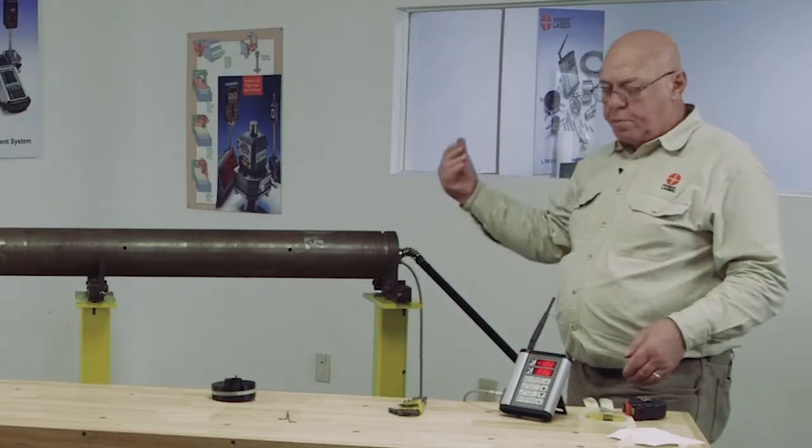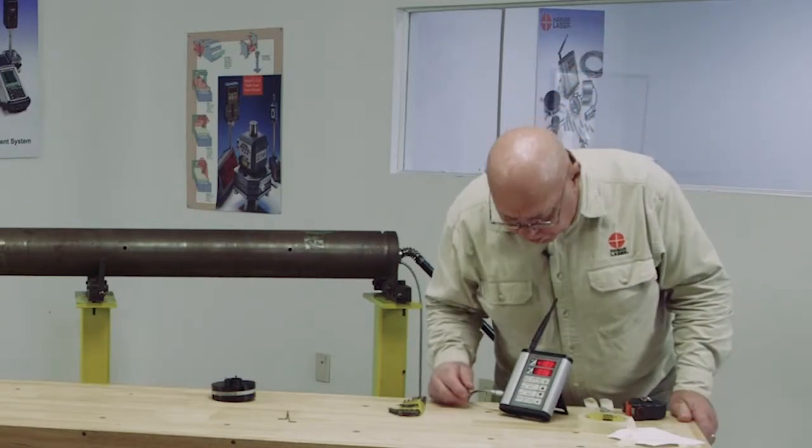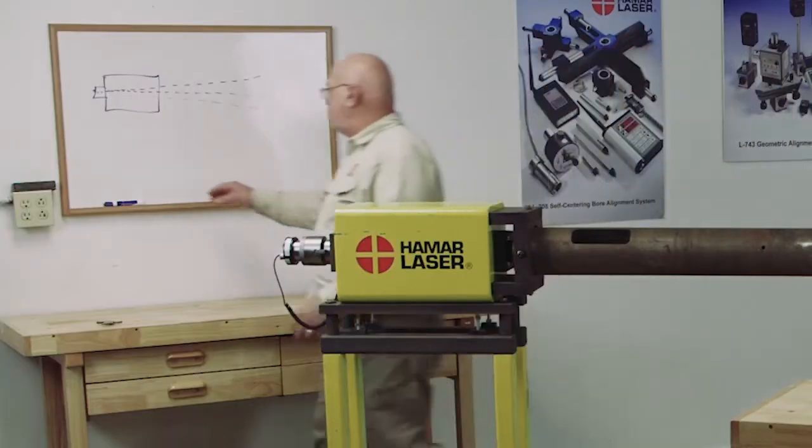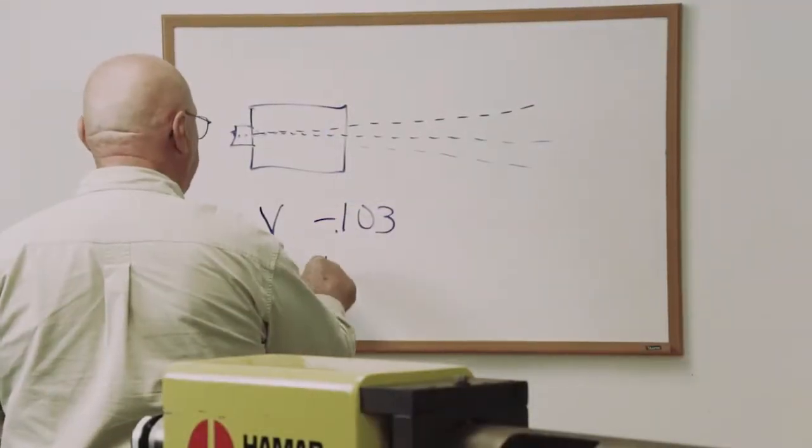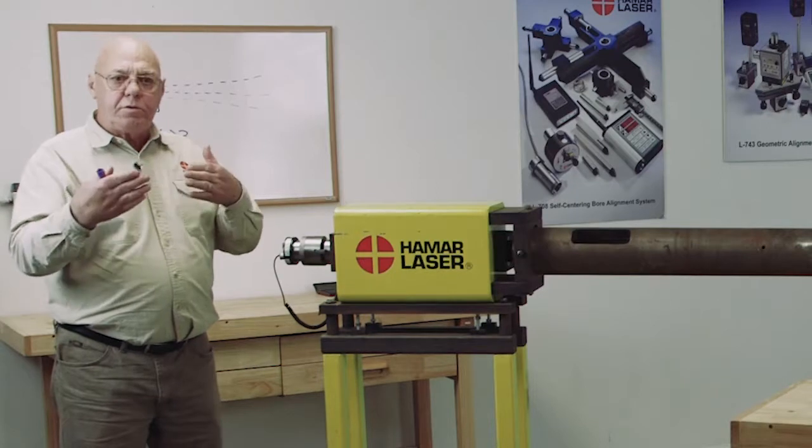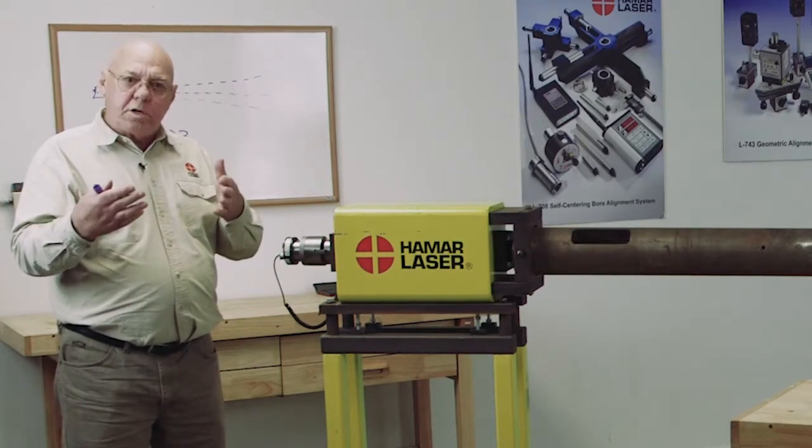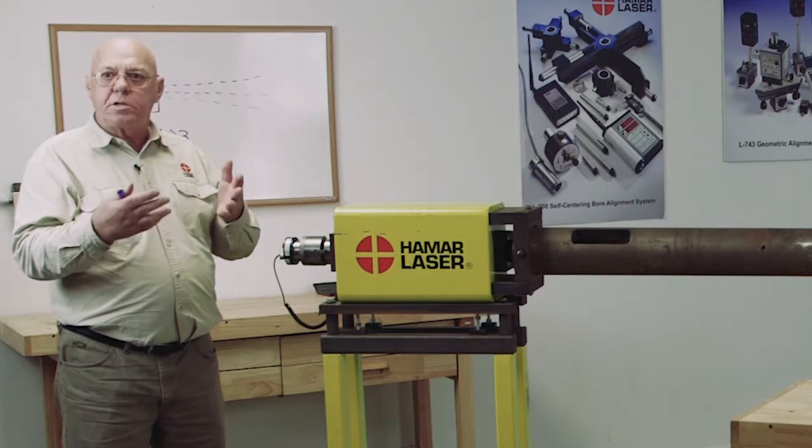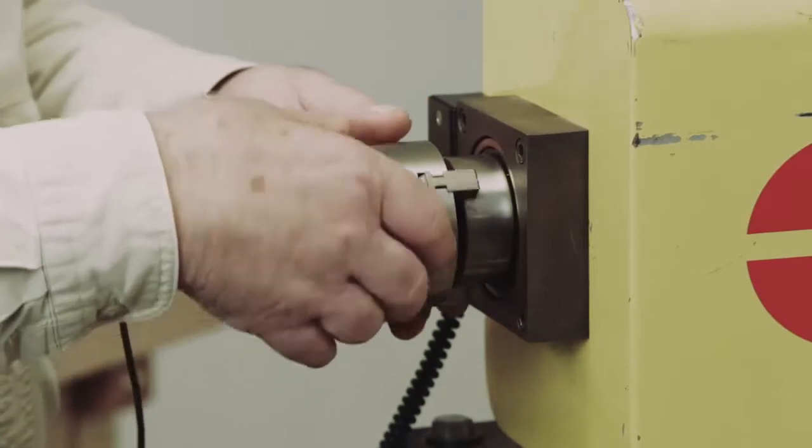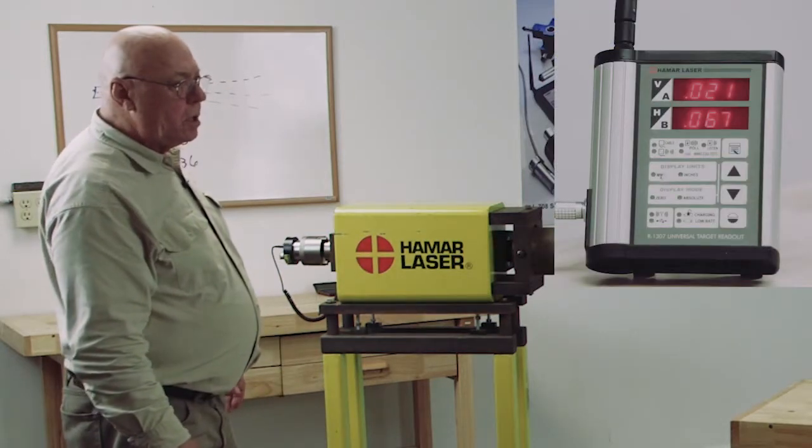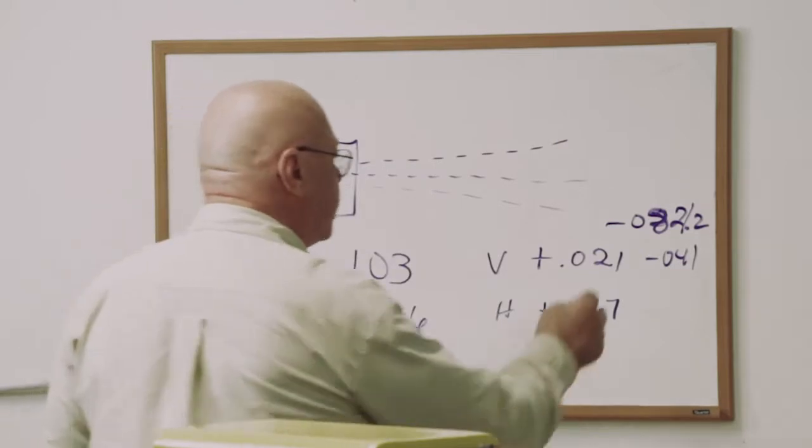I've done a coarse alignment with the paper. Now I have to fine-tune this. I'm going to look at my numbers here, and I have minus 103 and plus 36. The vertical number is minus 103, and the horizontal number is plus 36. The object here is I'm going to rotate this 180 degrees, and I'm going to add the two vertical numbers together and divide it by two to get an average. That's going to be my vertical set point. I get minus 41.